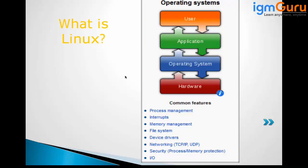As computer engineers we know that everybody uses different kinds of operating systems. For Linux itself we have so many flavors. If you go to Windows, we have so many versions: Windows 98, Windows Networking, Windows 2000 Server, Windows Millennium, and so many other Windows flavors.